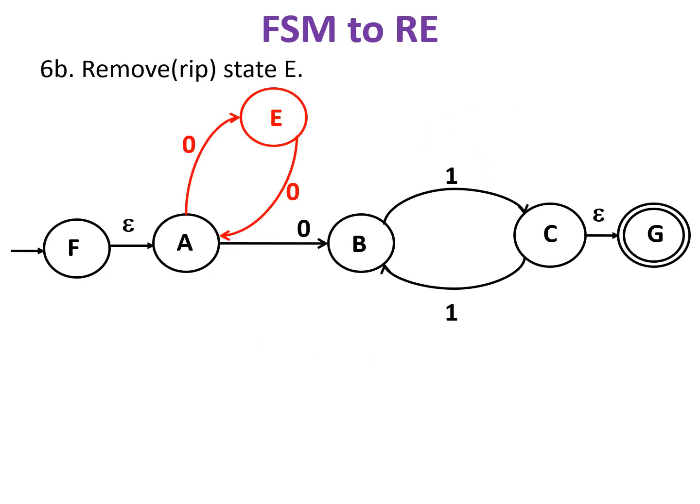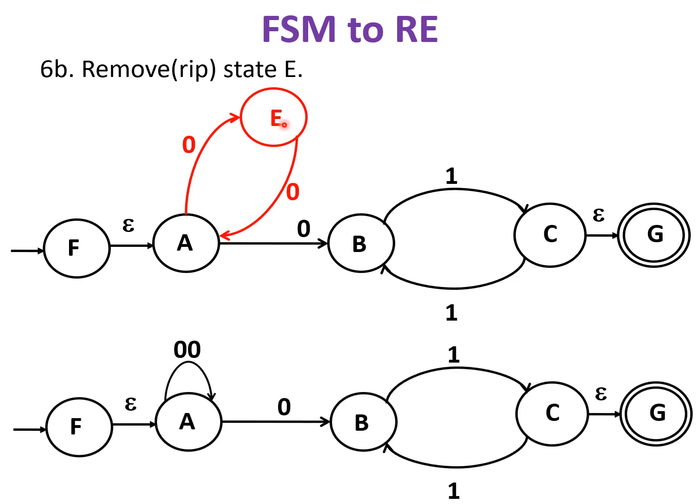Next let's select state E to be removed. E has a self loop to A with string 00. On eliminating E, we get state A having a self loop with a string 00.